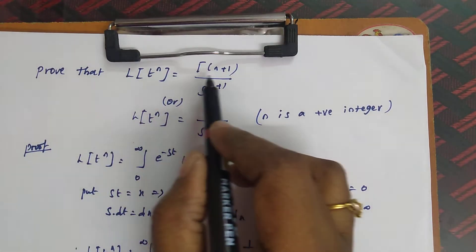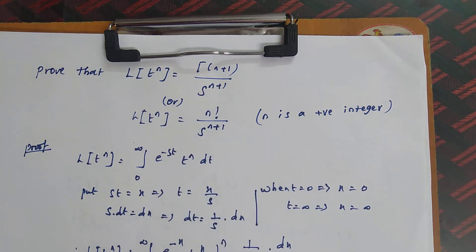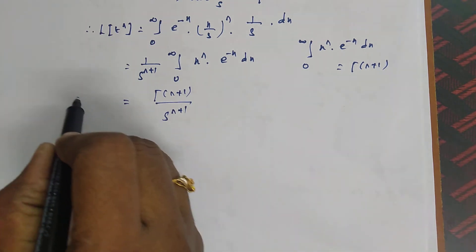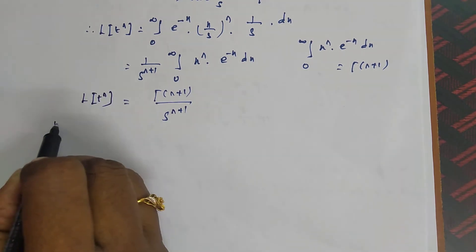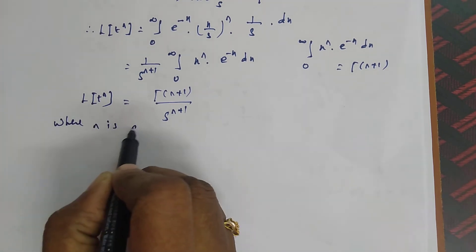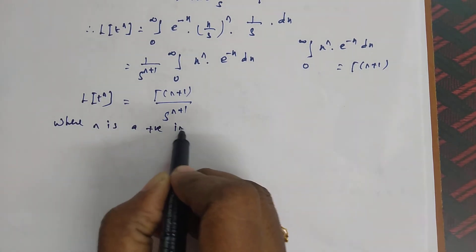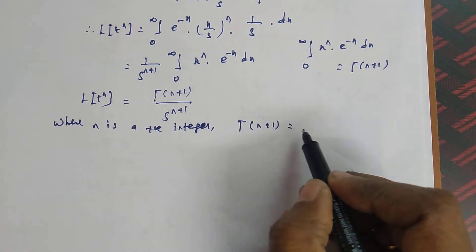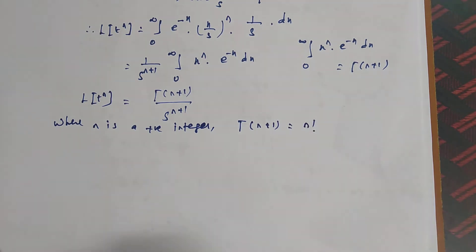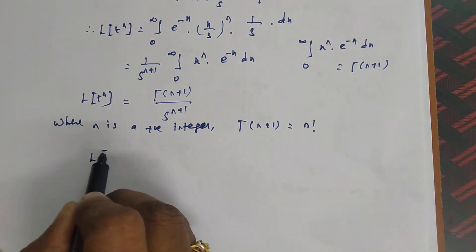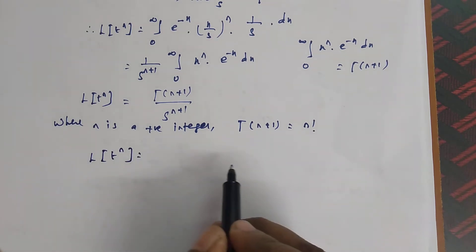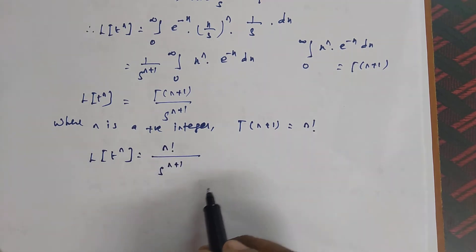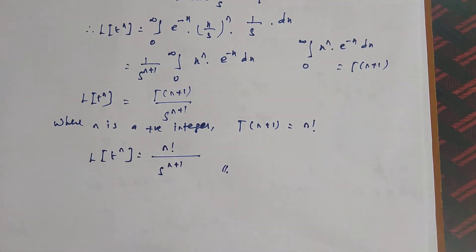We have proved that L of t power n equals gamma of n plus 1 by s power n plus 1. Moreover, where n is a positive integer, we have the result that gamma of n plus 1 equals n factorial. Applying this result, L of t power n equals n factorial divided by s power n plus 1. So both forms of the result are established.